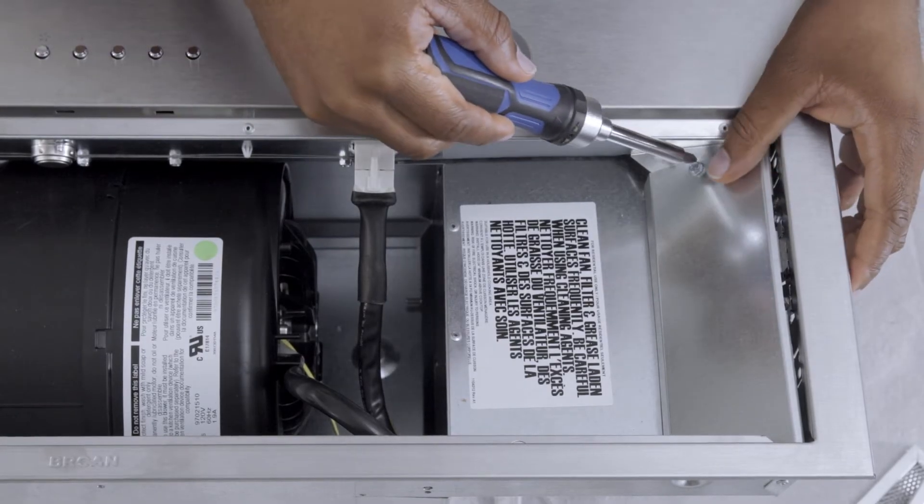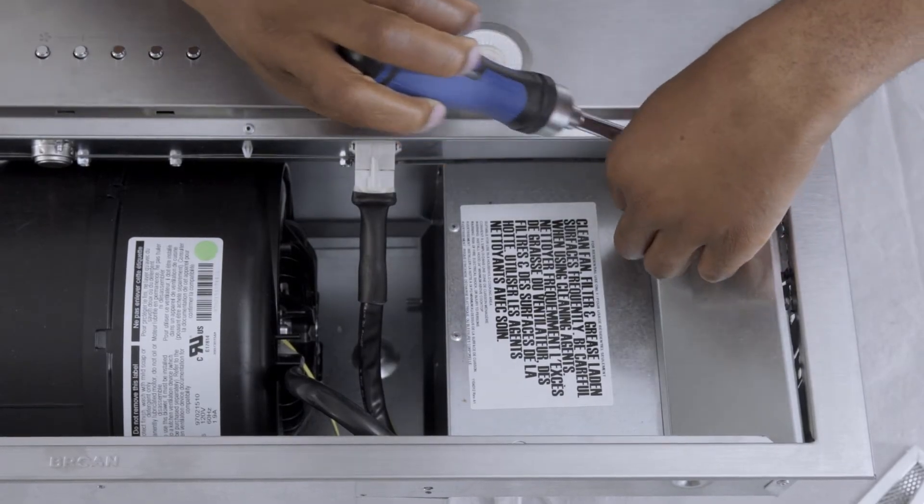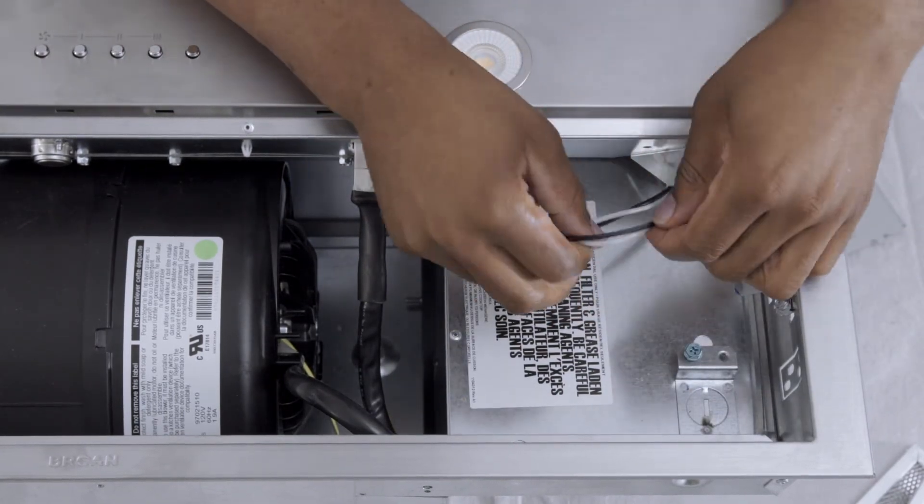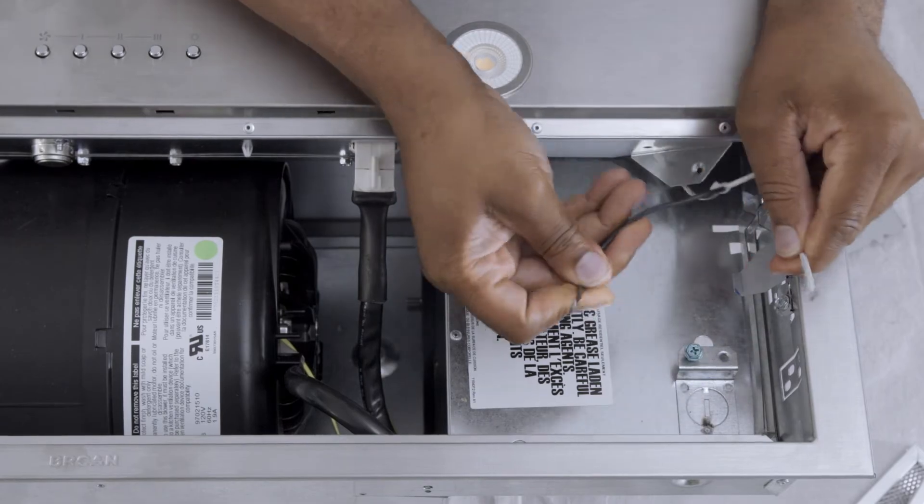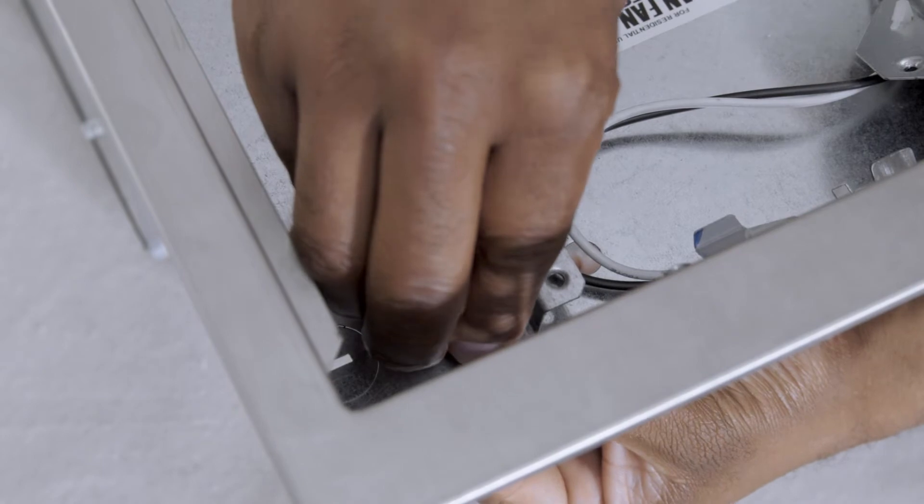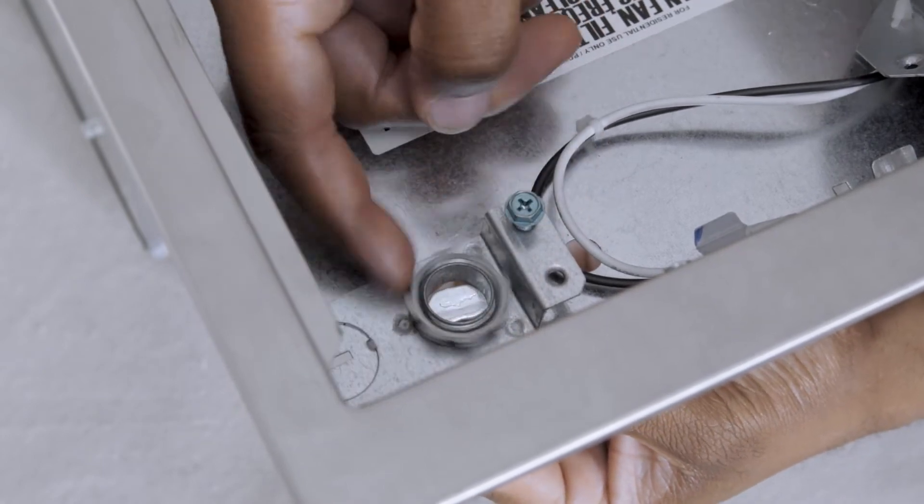To prepare the unit, disassemble the electrical compartment cover from inside the unit. Set the parts aside for use later. Once the knockout hole is punched out, install an appropriate 7 and 1/8 inch diameter strain relief.